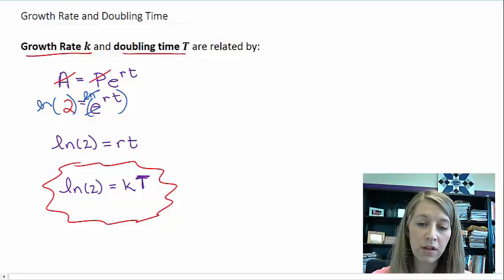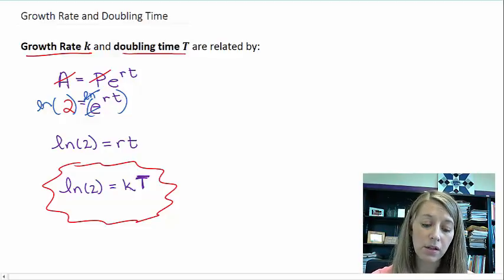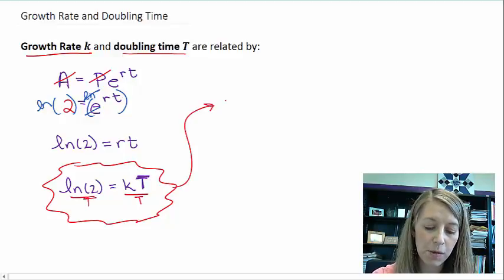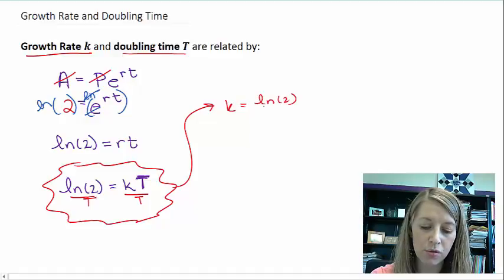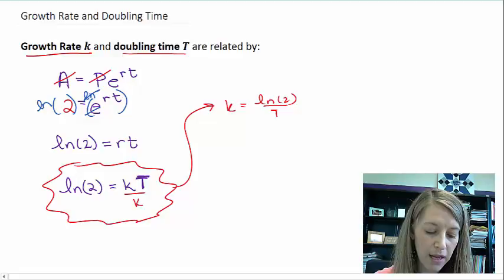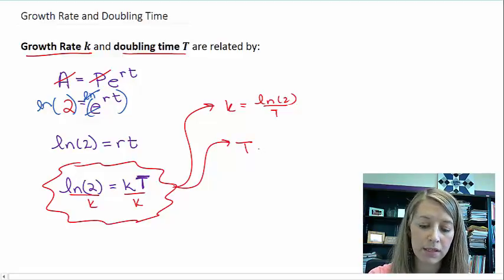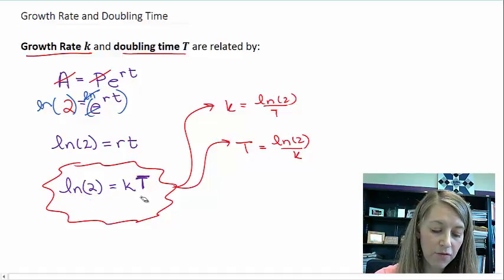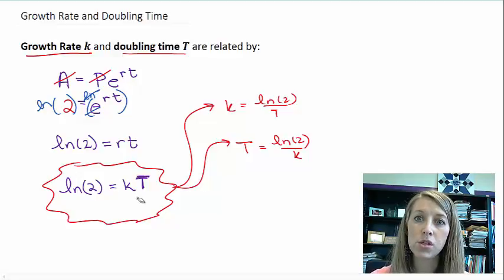If I want either of these specifically, I could solve for them very easily. If I wanted to solve for k, I could just divide by t. So k equals ln(2) divided by t. Or if I wanted to solve for t, I could very easily divide by k. So capital T, or doubling time, is equal to ln(2) divided by our growth rate. We have our basic formula here, or we can manipulate it to solve for exactly what we want to solve for.